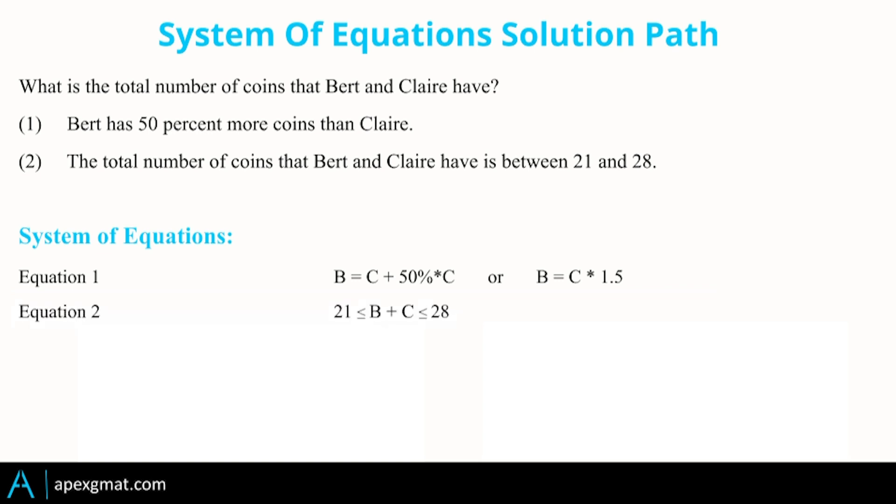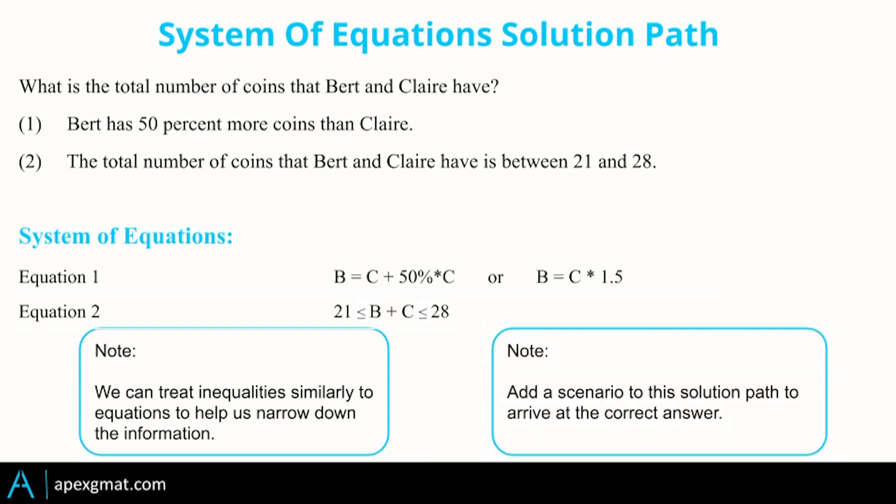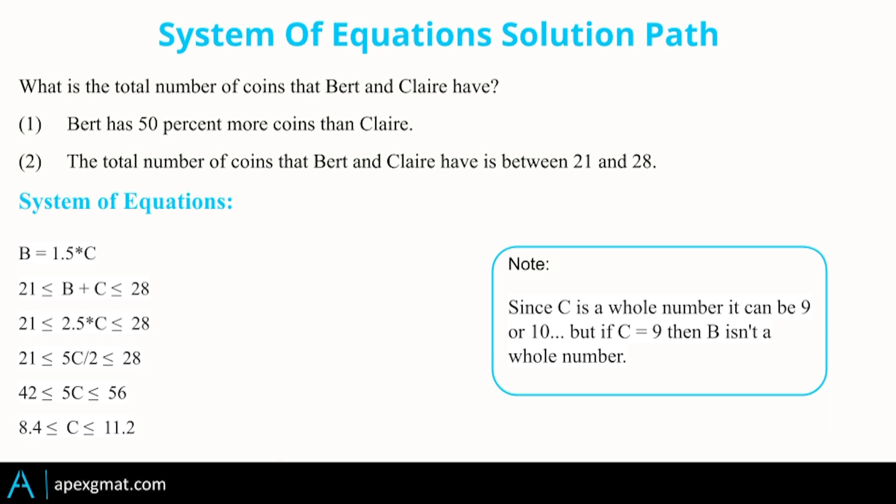Number two tells us an inequality that B plus C is in between. While this might not look like an equation, it is a range and we can treat inequalities very much like equations for the purposes of narrowing down. So while this isn't a perfect solution path, it lets us know that we have a system and that if there's only one instance within that range, that this will be sufficient. And so if we tackle it from that system equation standpoint, we then have to go in and just run a scenario and we end up back where we started on that solution path.